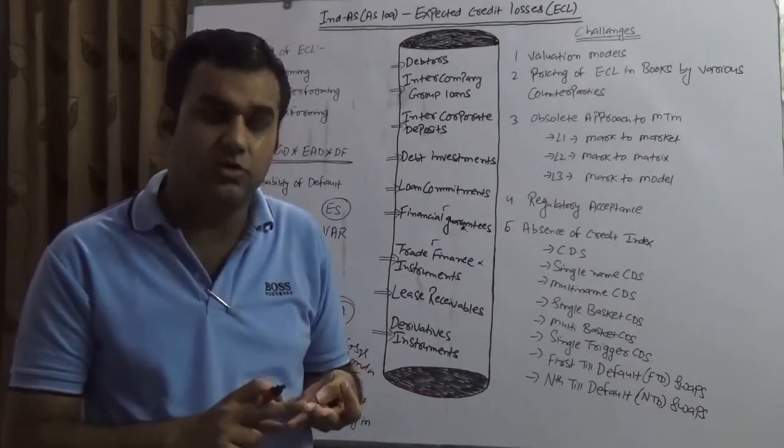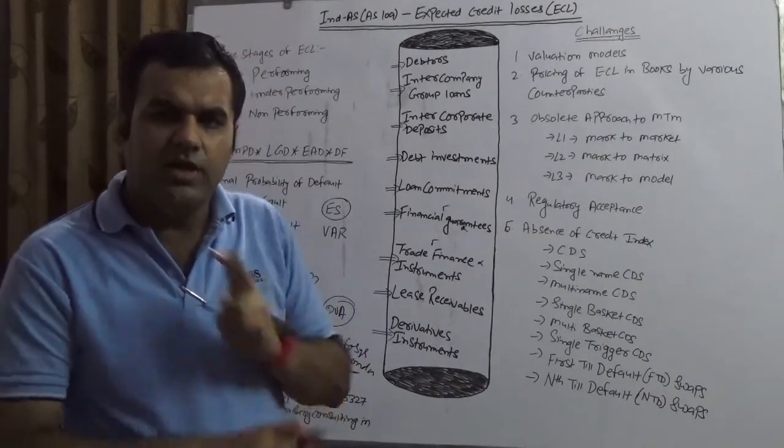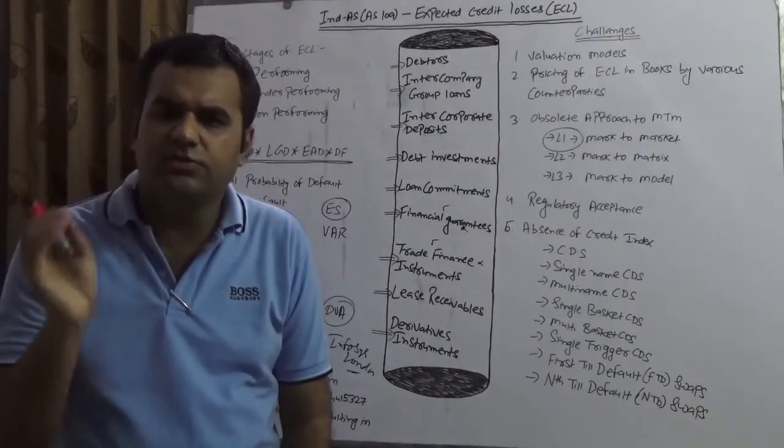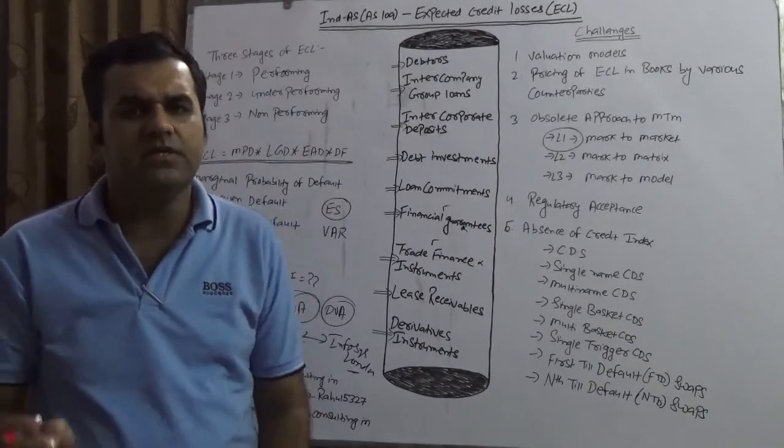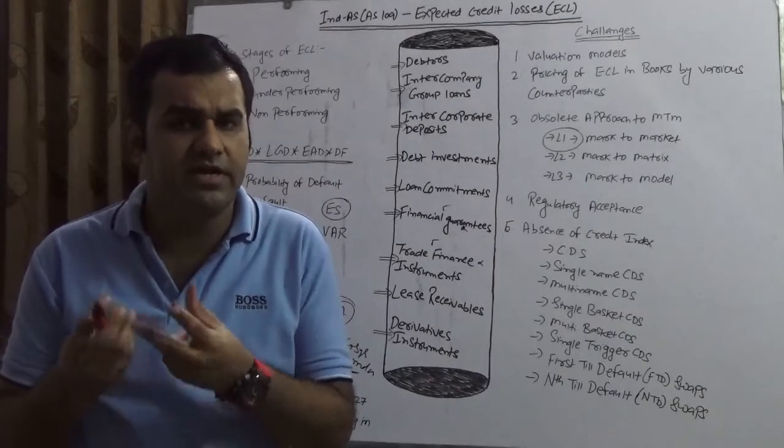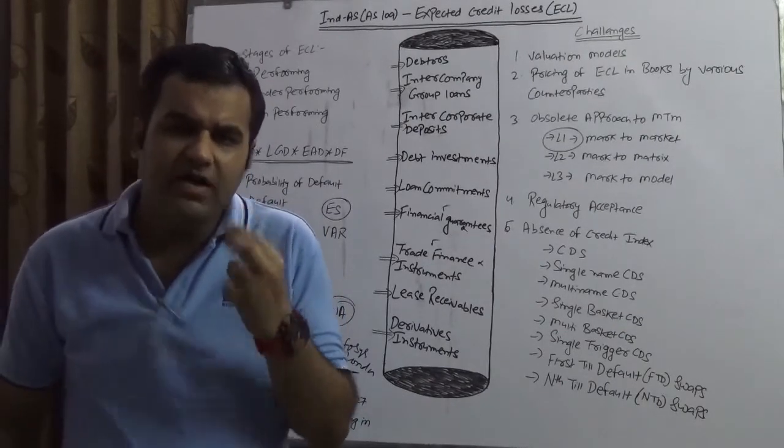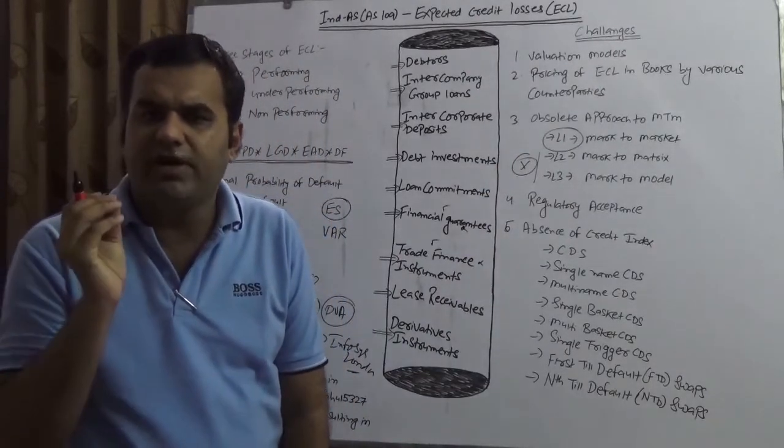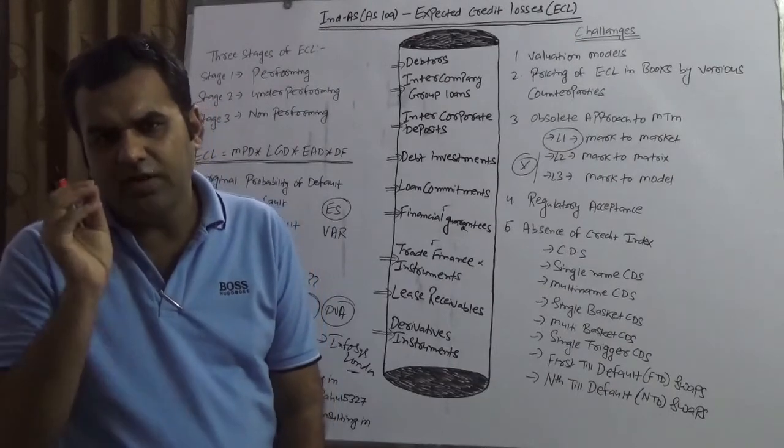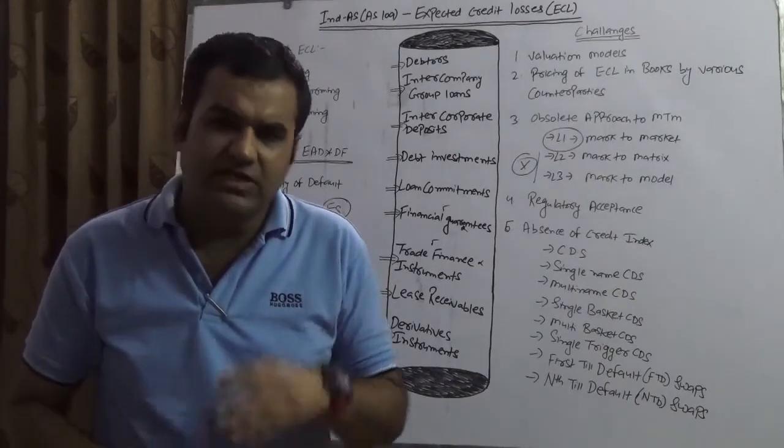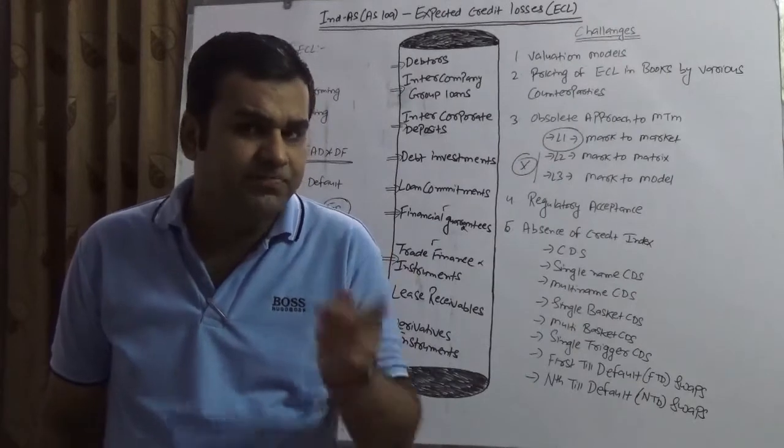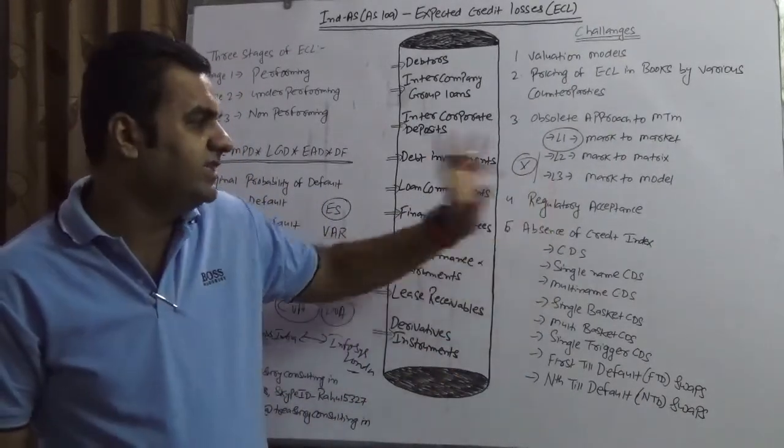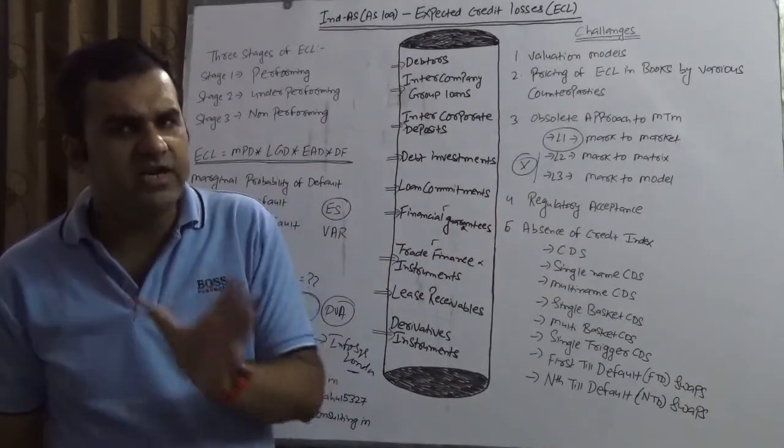99% valuation in India is happening on L1, level 1, whereby 100% of the observable variables are observable in nature. Observable variables are those variables readily available in the market. Hardly 1% valuation in India is happening on L2 and L3, whereby you are taking non-observable variables into consideration. As far as credit risk management is concerned, we all understand that 99% of credit derivatives fall in either L2 or L3, and here also they fall in L3.